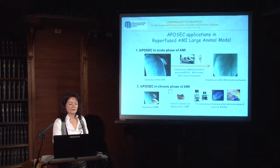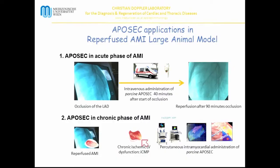The second setting was EPISEC in the chronic phase of MI. We created the same reperfused myocardial infarction but did not treat the animals with EPISEC in the acute phase. We waited approximately 4 weeks to develop chronic ischemic left ventricular dysfunction — called ischemic cardiomyopathy. After that, we used three-dimensional NOGA-guided intramyocardial injection of EPISEC through a NOGA catheter introduced into the left ventricular cavity, injecting via a steerable needle into the border zone of the myocardial infarction.